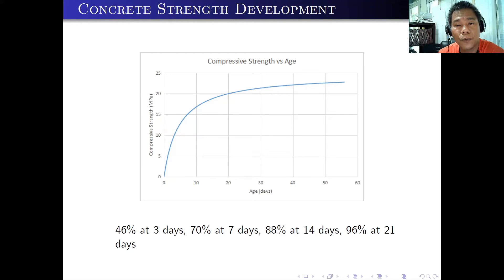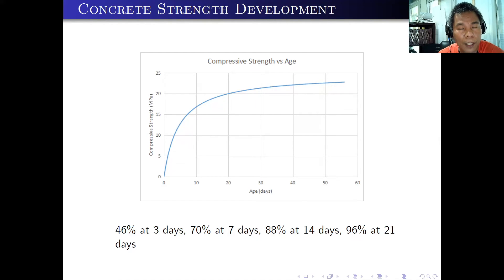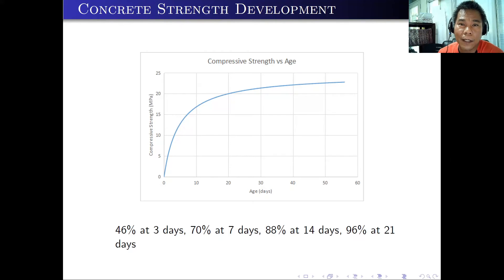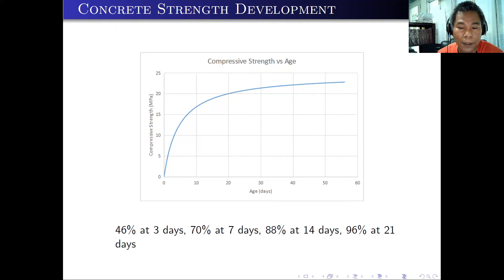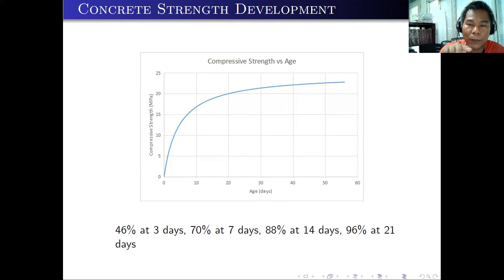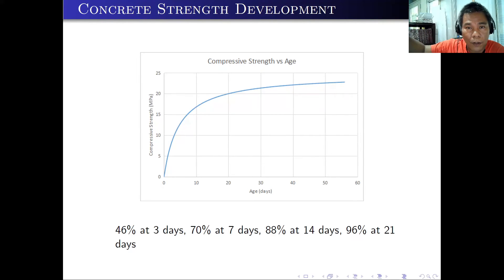If we plot the first formula, this will be the result. At age 0 or day 0, there is no strength. The cement paste will start to set at around 1.5 hours and reach final set at around 4 hours, after which it increases in strength. At 3 days, the gained strength should be around 46 to 50%. At 7 days, that's around 70%. At 14 days, 88%. And at 21 days, that's 96% of the 28-day compressive strength. If you continue the graph, it will still increase but very slowly. So the strength development of concrete is really fast in the first few days and then slows dramatically.